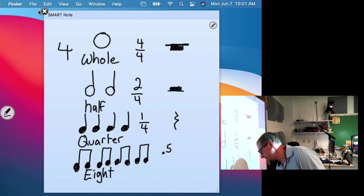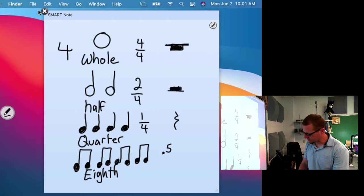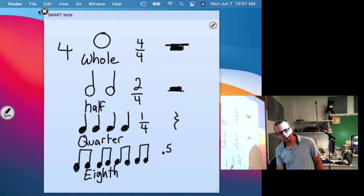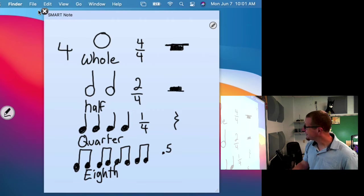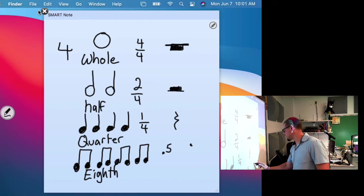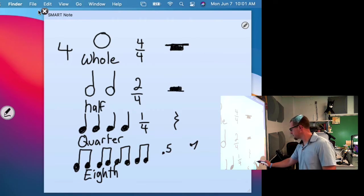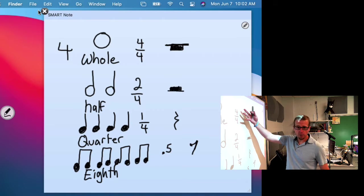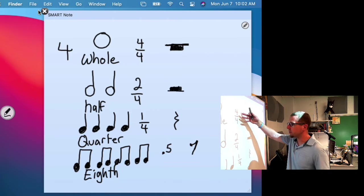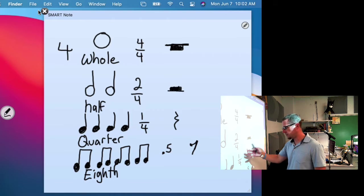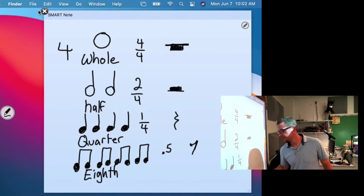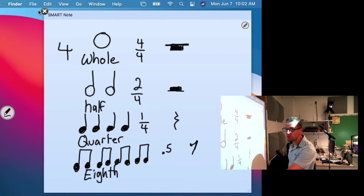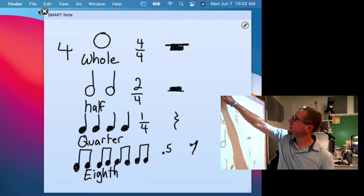Okay, eighth notes. G-H-T-H. Man, what a weird word. E-I-G-H-T-H. Eighth notes. All right, eighth rest looks like this, kind of like a 7 with a bell. So we have four beats in a whole note, two beats in a half note, one beat in a quarter note, and a half a beat in an eighth note. Not a half note, a half a beat, 0.5 of that one. All right, I'm going to save this.